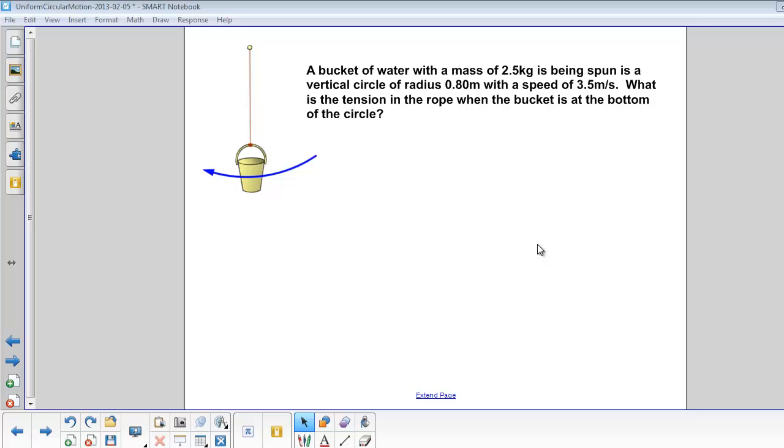A bucket of water with a mass of 2.5 kilograms is being spun in a vertical circle of radius 0.8 meters with a speed of 3.5 meters per second. What is the tension in the rope when the bucket is at the bottom of the circle?